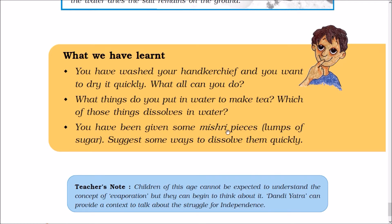You have been given some mystery pieces — lumps of sugar called misri. Suggest some ways to dissolve them quickly. First, crush the mystery pieces into fine powder. Second, put them in water and stir continuously. You can also warm the mixture on a flame to help it dissolve faster.